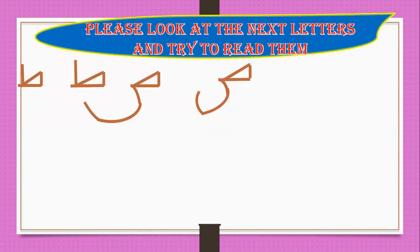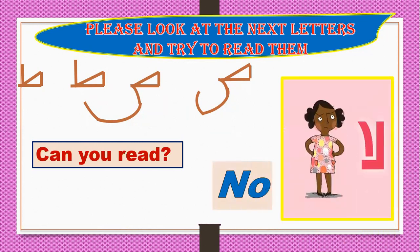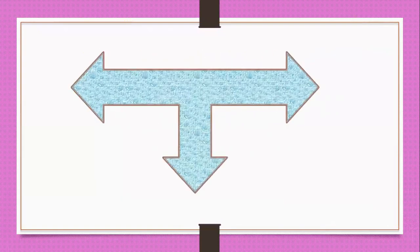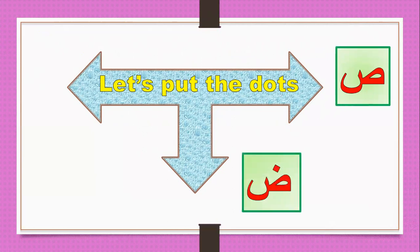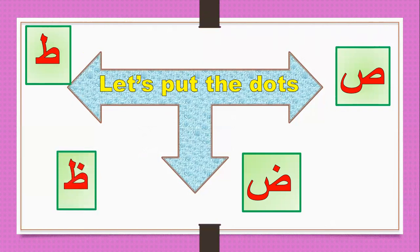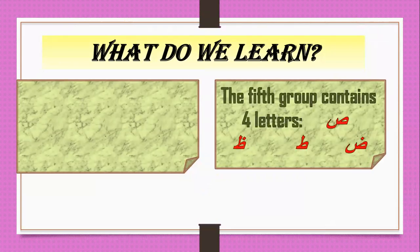Please look at the next letters and try to read them. Can you read? No — don't worry. Let's put the dots. Can you read now? What is this letter? The letters are: Sa, Da, Ta, Da. What do we learn? Number one: the fifth group contains four letters.